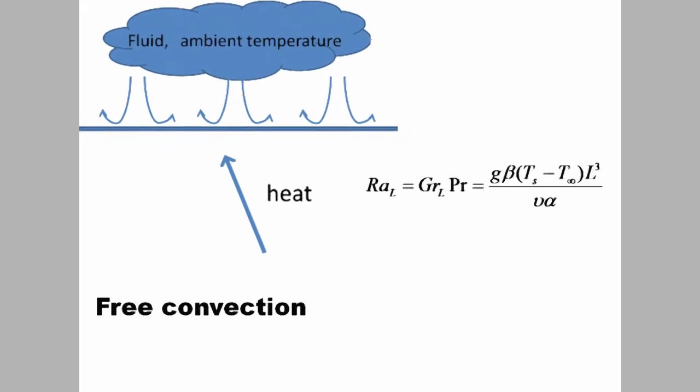In free convection, the Rayleigh number, a product of the Grasshoff and Prandtl numbers, is a number used to describe a free convection system. The average Nusselt number can be found from the Rayleigh number with this correlation. From that, a function for the convective heat transfer coefficient can be found.